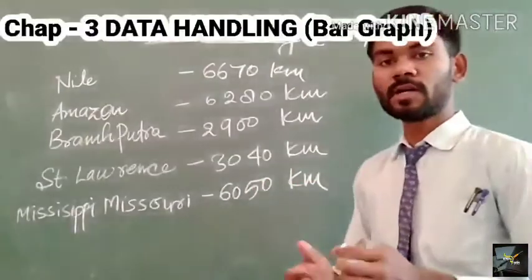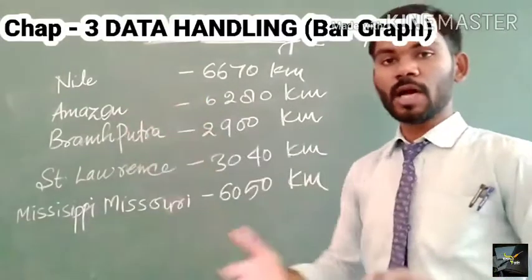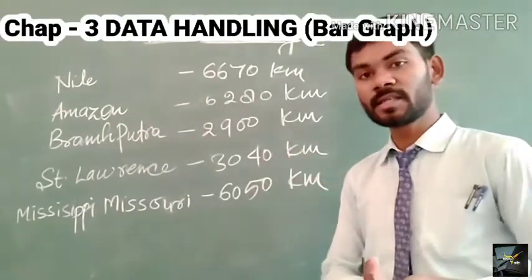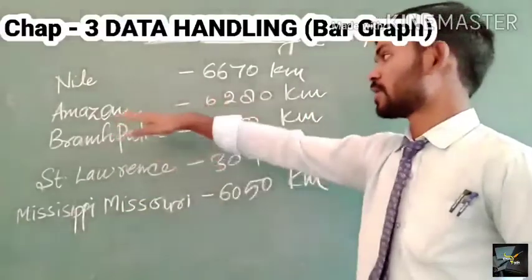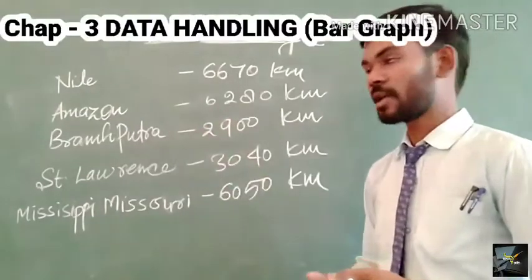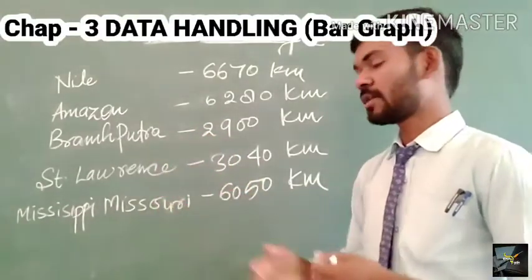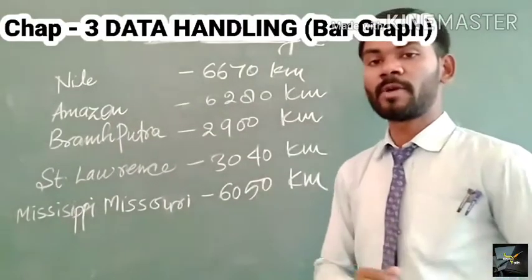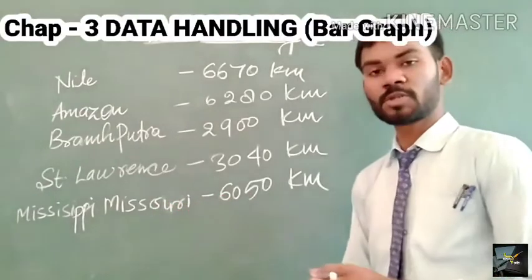So these are some of the world's largest rivers — Nile, which flows in Africa; Brahmaputra, which flows through India; and St. Lawrence and Mississippi Missouri, which are found in America. The Mississippi Missouri is America's largest river.